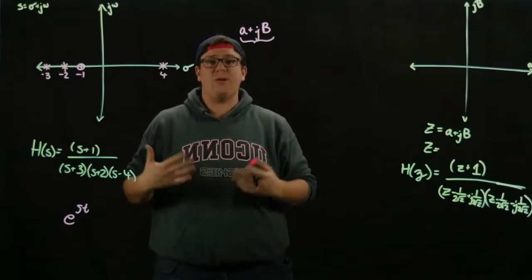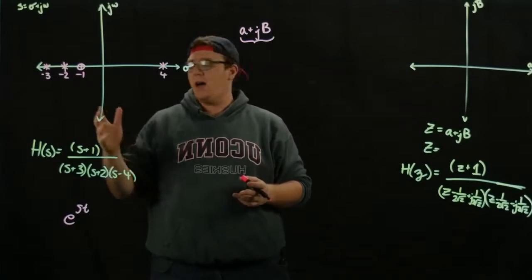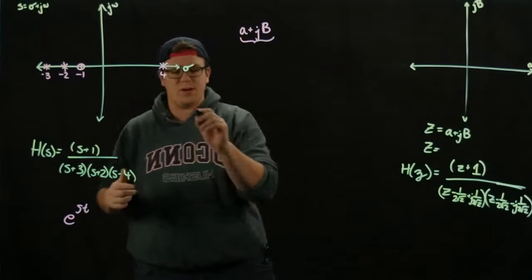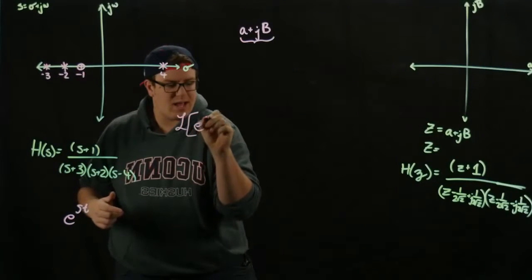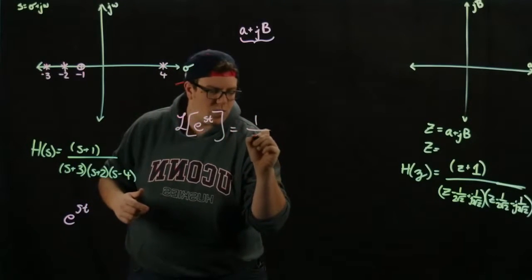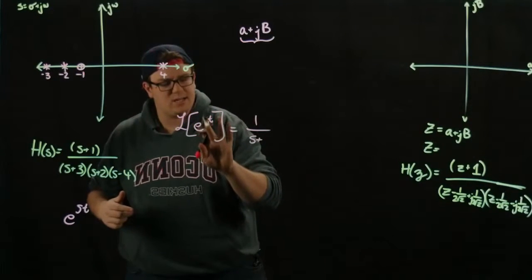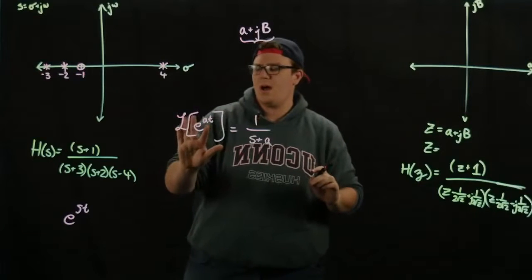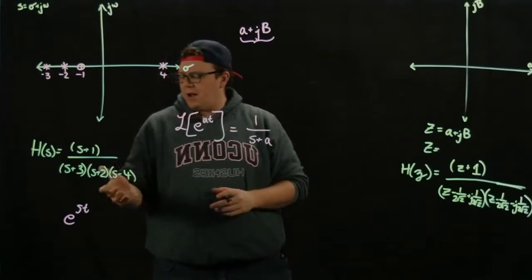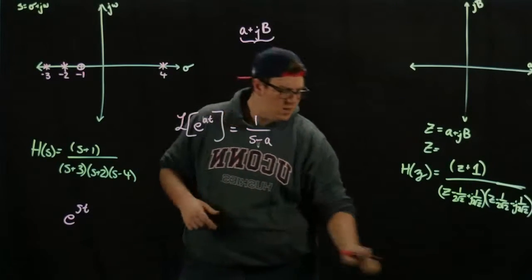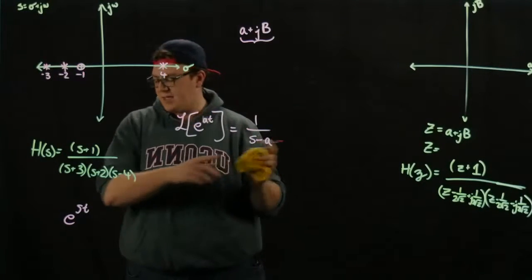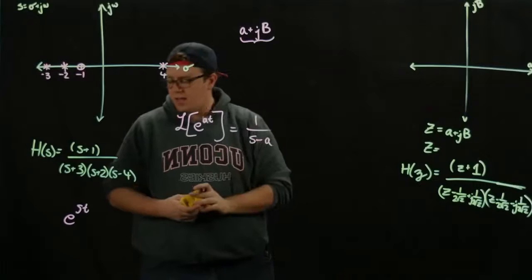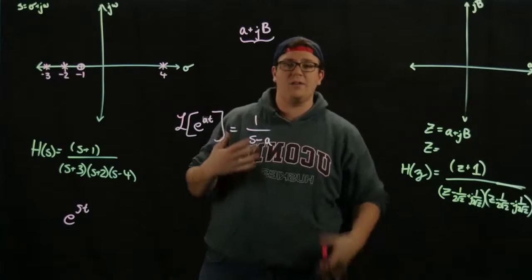The reason for that being is that we know that the response, or if we take the inverse Laplace transform of this transfer function here, so we get our natural response of our system, is going to look like e to the st. Because we know that the Laplace transform of e to the at is just 1 over s plus a, or 1 over s minus a. So we know that if we take this back and this becomes a positive number, then our response is going to shoot off to infinity. We need this to be a negative number so that it doesn't shoot off to infinity for any kind of constant input.